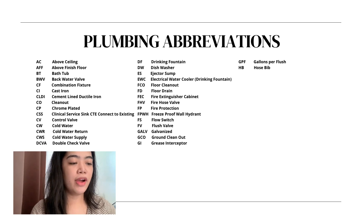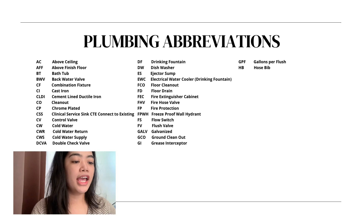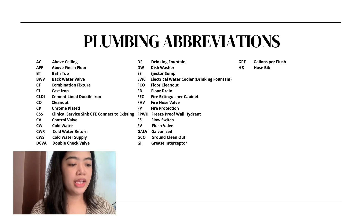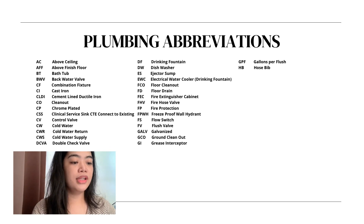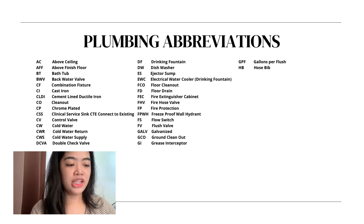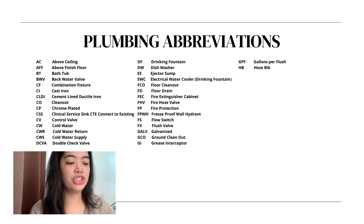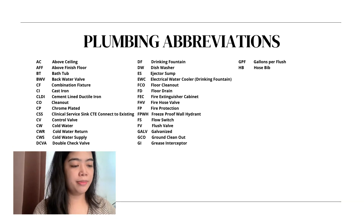FHV — fire hose valve. FP — fire protection. FPWH — freeze-proof wall hydrant. FS — flow switch. FV — flush valve. GALV — galvanized. GCO — ground clean out. GI — grease interceptor. GPF — gallons per flush. HB — hose bib.